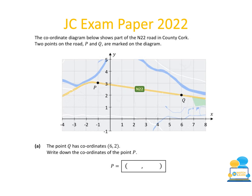The second exam question is from the 2022 paper. It describes the N22 road in County Cork with two points P and Q marked on a diagram. Q has the coordinate (6, 2), and we can verify that Q is at 6 on the x-axis and 2 on the y-axis. For point P, looking at the diagram, P is at minus 1 on the x-axis and 3 on the y-axis, giving us the coordinates minus 1, 3.